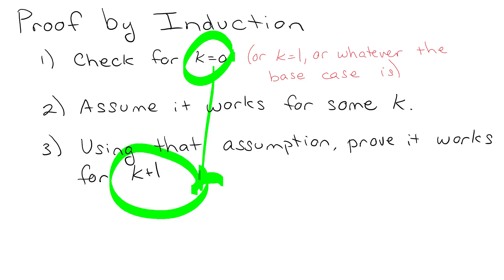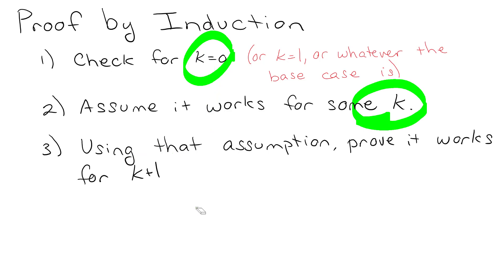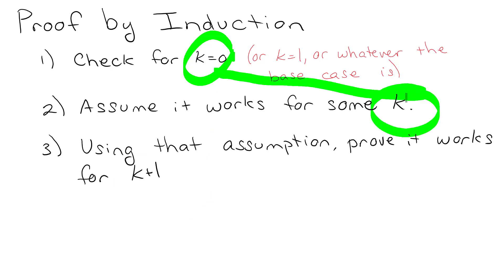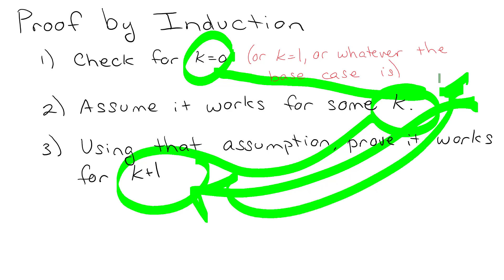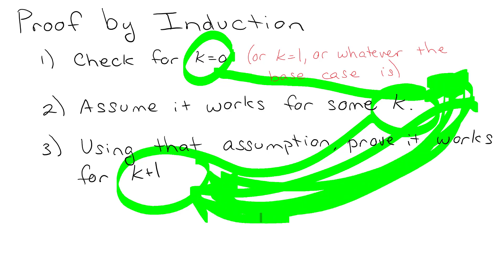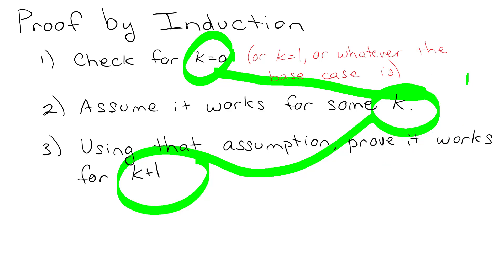The idea is: if you prove it works for k equals 0, and then assume it works for some k which means it also has to work for k plus 1, then you can say — well, if k was 0, it must work for 1. Now it's at 1, so it must work for 2. Now we're at 2, so it must work for 3, then 4, and so on. That's what proof by induction does.